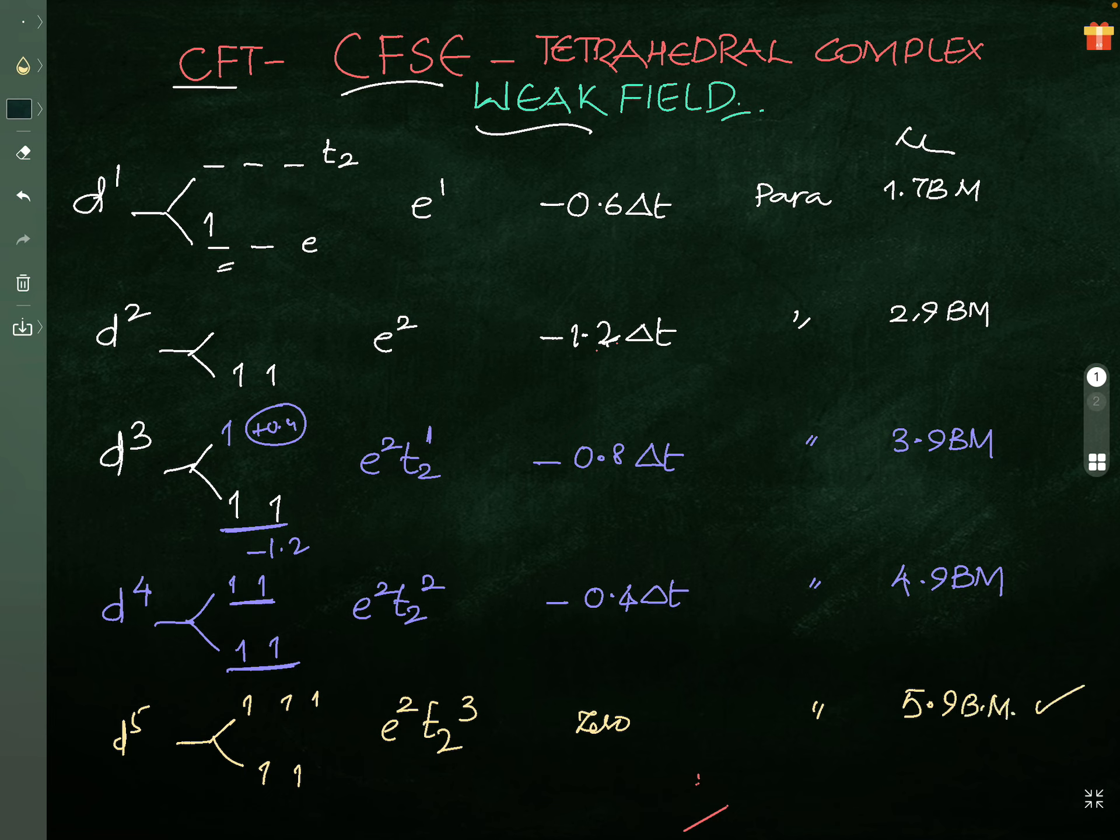d1, d2, d3, d4, d5 - you can check if you have any doubt. d6: same thing, one, two, three, four, five, then six. So e3 t2^3 and the energy is initially it was zero because of all five electrons, now again it is started minus 0.6 delta t, no pairing, nothing.